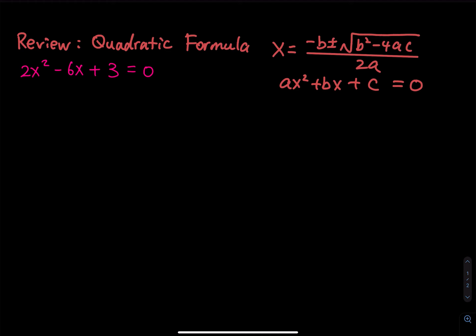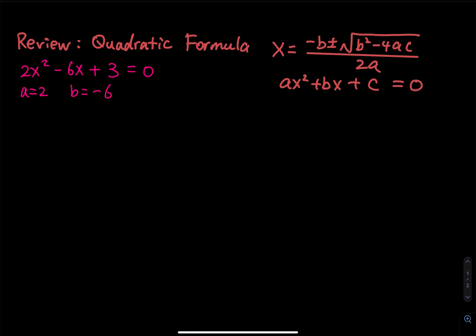Let's do a quick example. We have 2x squared minus 6x plus 3 equals 0. Let's identify what a, b, and c are. So a equals 2, b equals negative 6 — you take the sign with the number as well — and c equals 3.